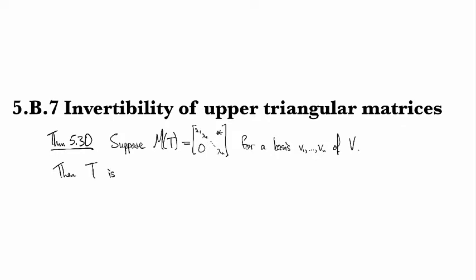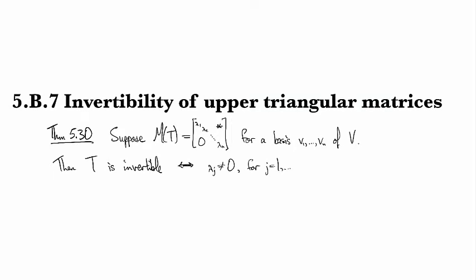Then T is an invertible transformation if and only if lambda_j is non-zero for j equals 1 to n. In other words, if and only if no zeros on the diagonal.